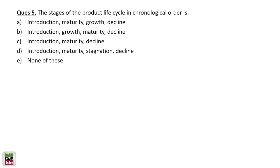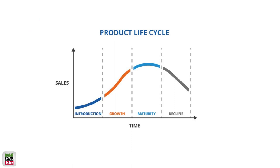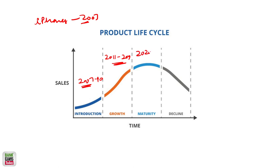The stages of the product life cycle in chronological order are: introduction, growth, maturity, and decline. When iPhone was introduced in 2007, not many people were using them — that was the introduction stage. Until 2010, not many people were buying them. A lot of people started buying them from 2011. In India, I would say until 2019 worldwide, it was in the growth stage. Right now, from COVID until 2022, it's at the maturity stage — its demand has become a little stagnant.